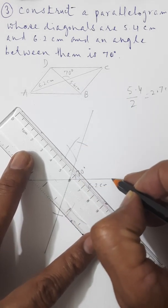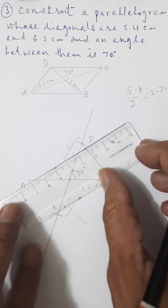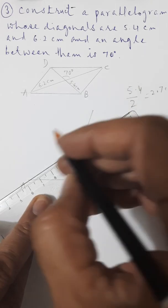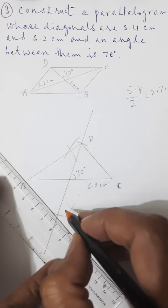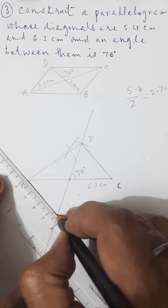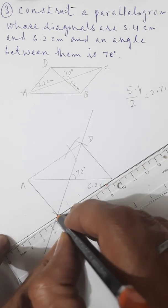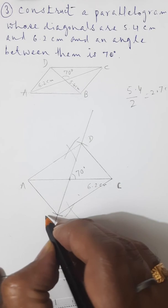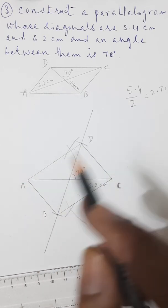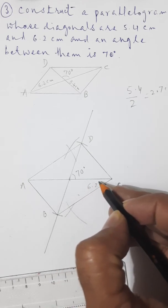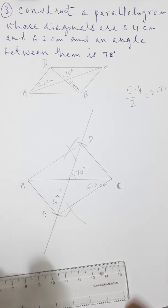Join it at point C and mark it as D. At the below intersection of the arc, join it again with A and C points. The vertices are A, B, C, D. This is our parallelogram as required — one diagonal of 6.2 centimeters, another of 5.4 centimeters, and the angle between them is 70 degrees.